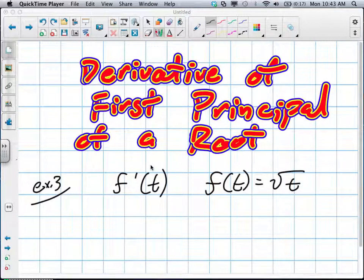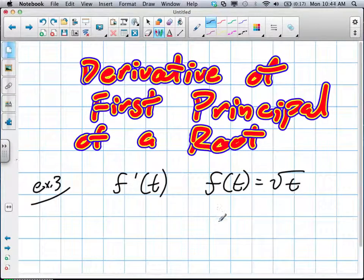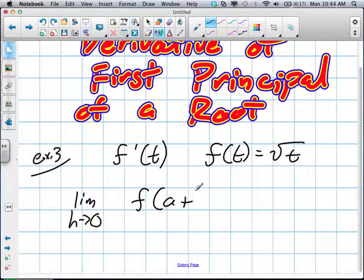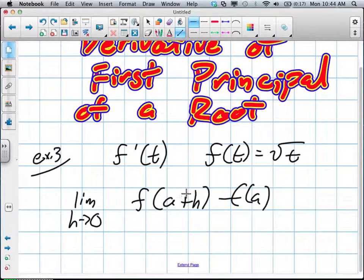We're going to find the derivative of f at t, so we're going to find f'(t) using first principle. Our first principle formula is the limit as h approaches 0 of [f(a+h) - f(a)] divided by h.